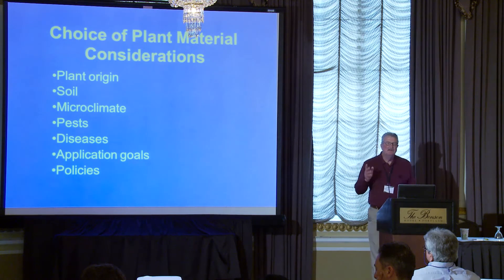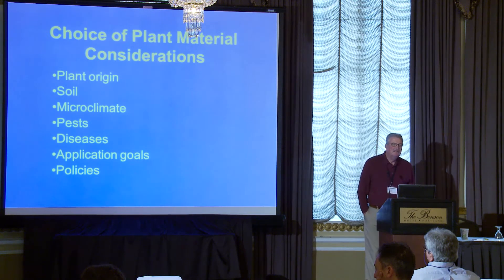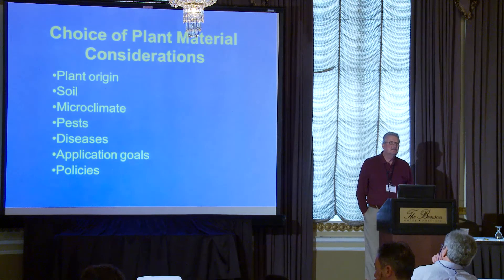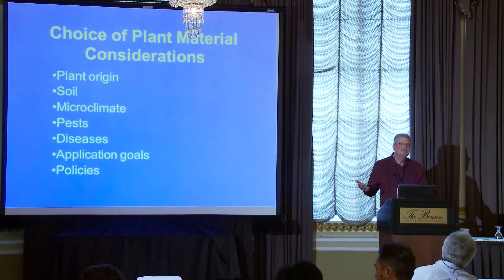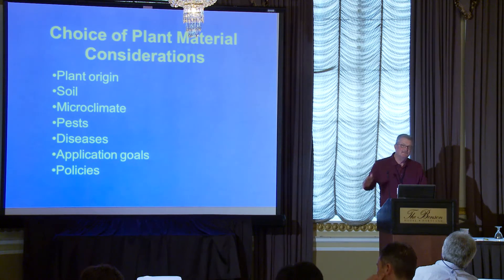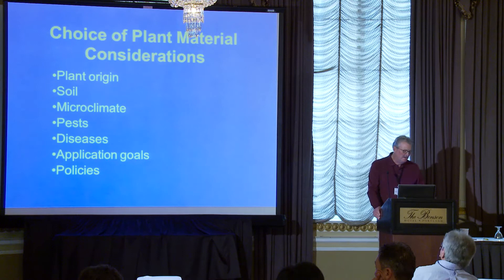Application goals are really important in choosing your plants, as are local policies, which can vary by state. For example, in some places you cannot apply certain wastewaters in a way that makes them airborne. We saw pictures this morning of spraying water on plants, but in some states you can't do that — it has to be drip applied.